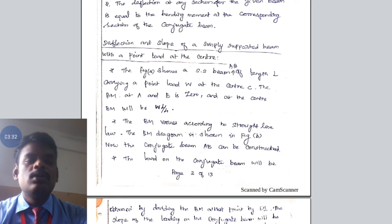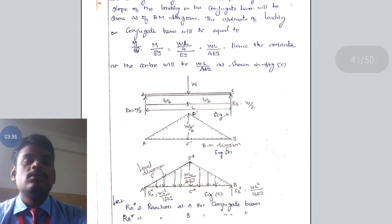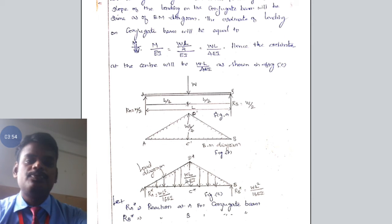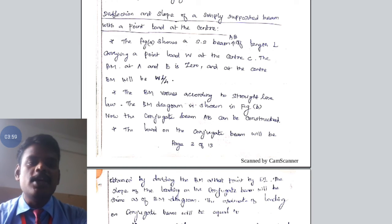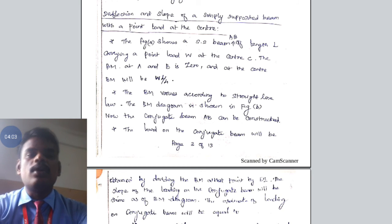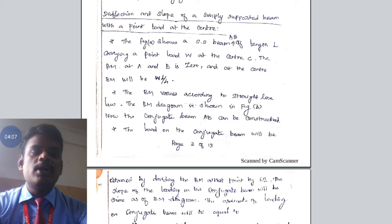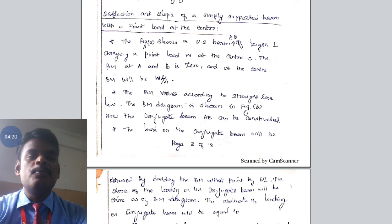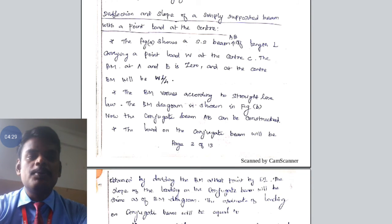Here you can see the figure. The total length of the beam is L and the value of the point load is W. This load is acting exactly at the center of the simply supported beam AB. The bending moment at supports A and B is zero, as always for a simply supported beam. The maximum bending moment occurs at the center C, and its value is equal to WL by 4. The bending moment varies according to the straight line law.